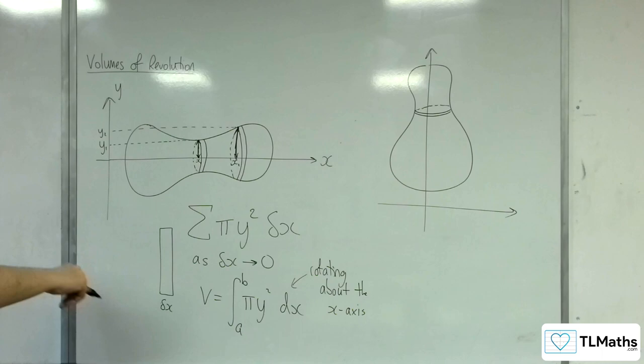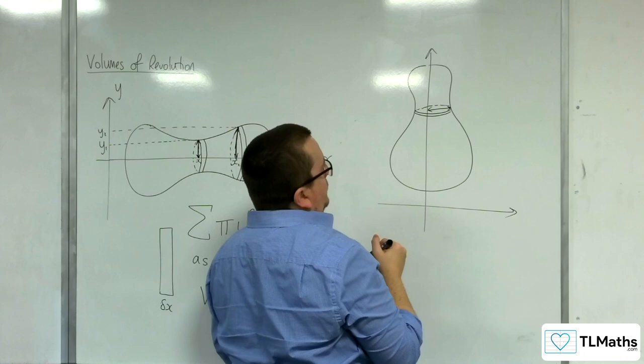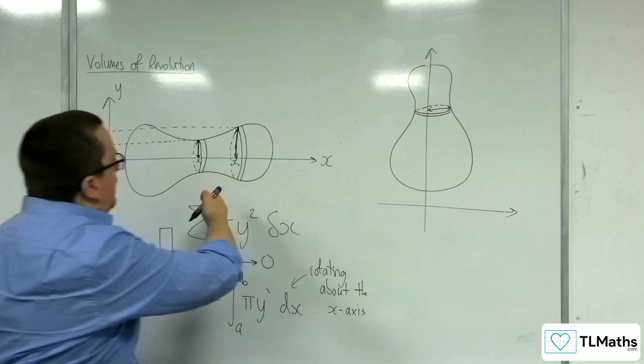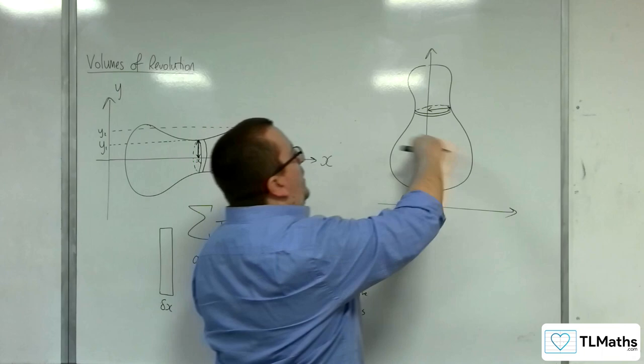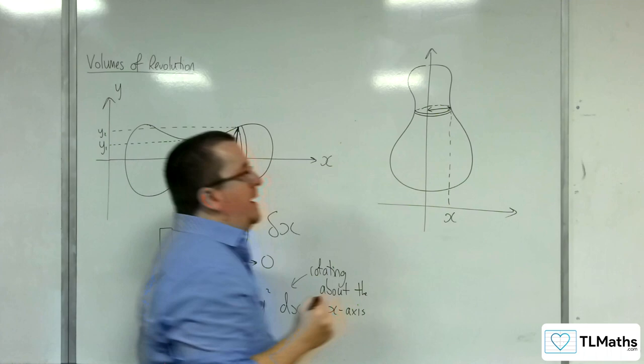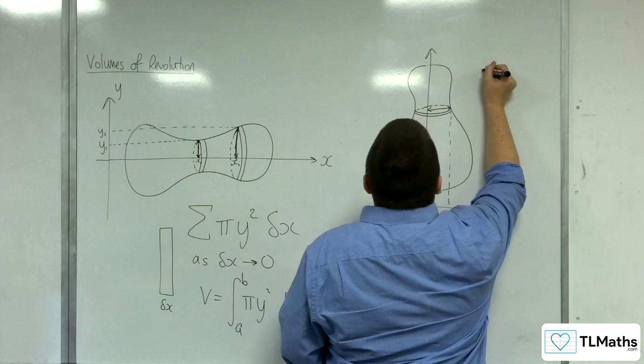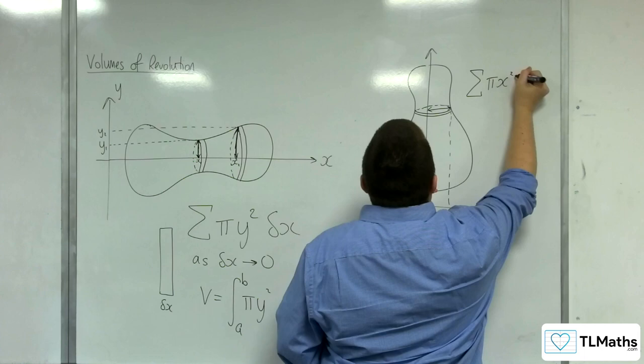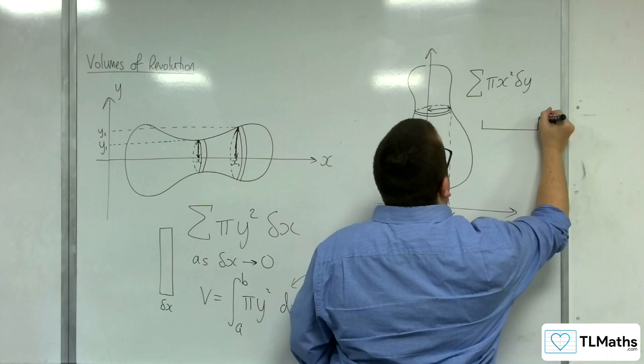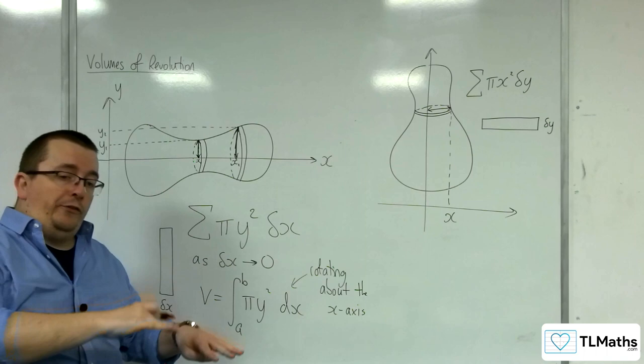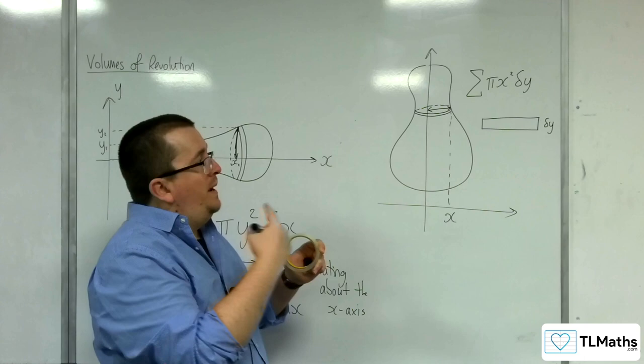So, this would now be my radius. So, rather than the y's changing as I move along the x-axis, now the x's are changing. So, the radius is now given by x instead. So, we would be adding together pi x squared delta y. Because each of these strips, I could say, are delta y in width. And the cross section, again, will be circular. And will be given by pi x squared instead.